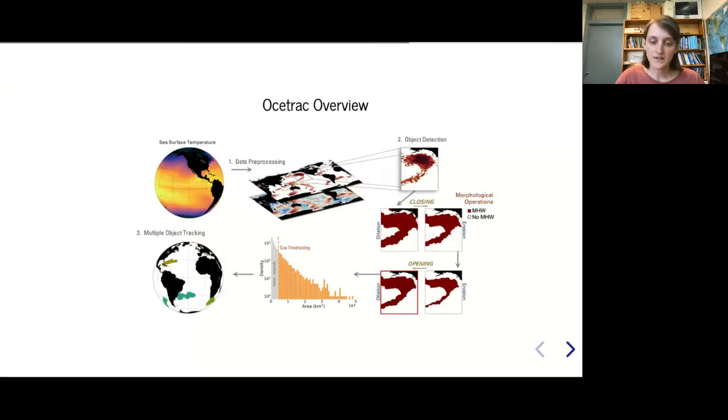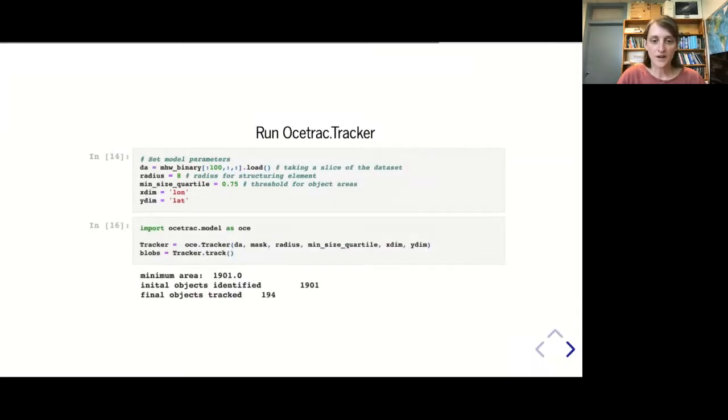An overview of OAStrack: there's a preprocessing step not involved in OAStrack where you create your binary image. OAStrack handles the object detection - the morphological operations, size thresholding, and tracking. For this top cell, I'm defining parameters that OAStrack requires: a data array using xarray showing a slice of the dataset, the radius is eight grid points, the min_size_quartile finds the 75th percentile, and you supply the x and y dimensions.